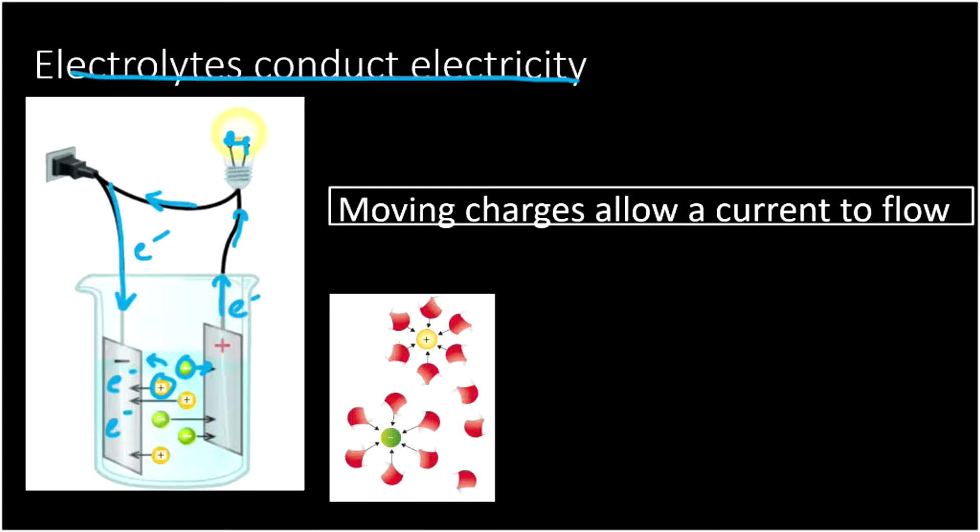So the moving charges in our solution allow a current to flow. So this means you can have a solution that's conductive. And we all know water is conductive, right? When we're in the swimming pool and there's lightning, we have to get out because it conducts electricity. Well, the reason it conducts electricity is because it contains all sorts of dissolved ionic compounds that are dissociated charges that move around. So that's electrolytes.